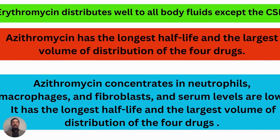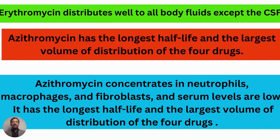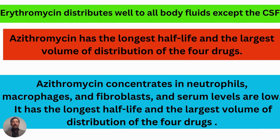Erythromycin distributes well to all body fluids except the cerebrospinal fluid. Azithromycin has the longest half-life and the largest volume of distribution of all four drugs. Azithromycin concentrates in neutrophils, macrophages, and fibroblasts, and serum levels are low. Please remember that azithromycin has the longest half-life among all macrolides.